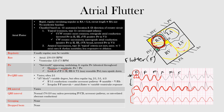Flutter waves can sometimes be difficult to identify on the EKG. The best leads to look for them are leads aVF and V1. Carotid sinus massage or other vagal maneuvers can transiently unmask flutter waves by increasing the degree of AV block and slowing the ventricular rate. You should see flutter waves throughout the entire EKG tracing to truly make the diagnosis of atrial flutter, because coarse atrial fibrillation may look similar.